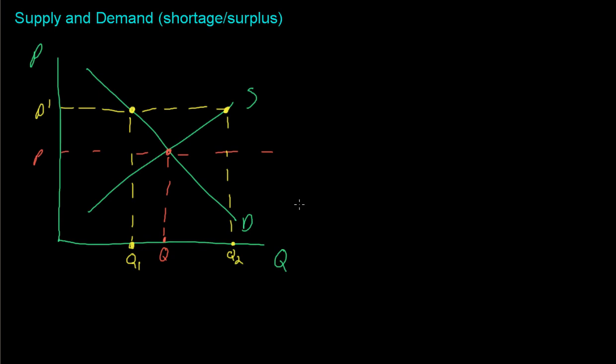So in this video I want to talk about shortages and surpluses. The normal supply and demand diagram we're used to seeing is the part that's in green and then in red.